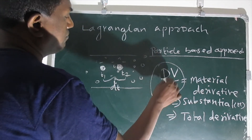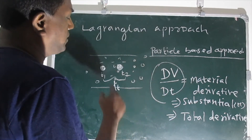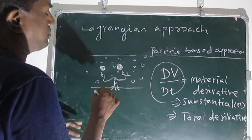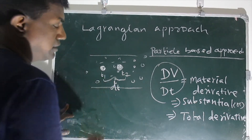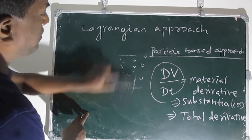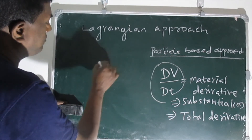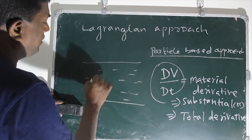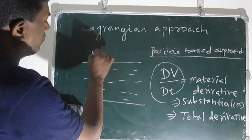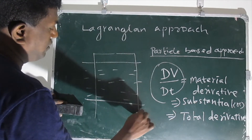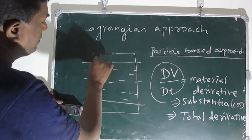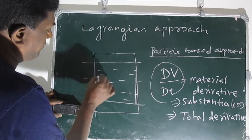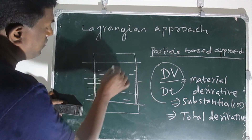Now, instead of considering only one particle, suppose we have n number of particles. We consider the entire fluid flow region and fix that region. This is the fluid flow path, and we fix our fluid flow region within it.